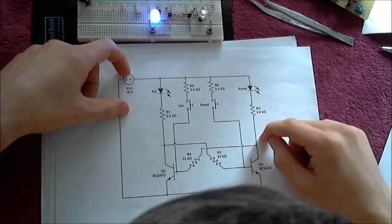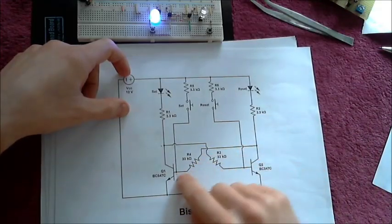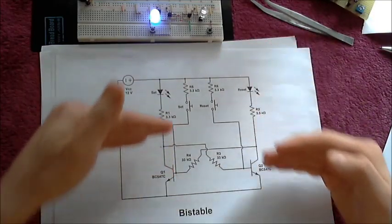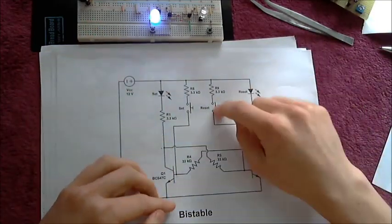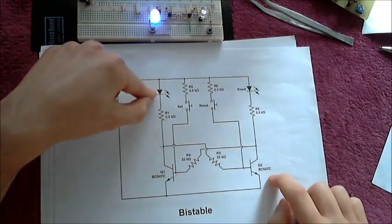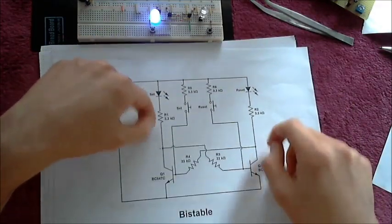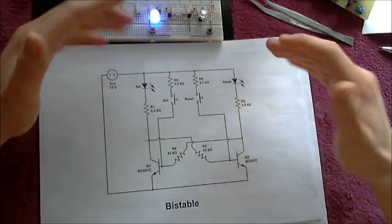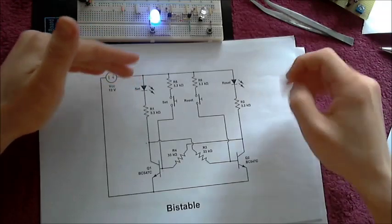When it turns even more on, the collector goes even higher, which means less current here. You can basically see that this is a feedback loop in which, when I push that switch, one transistor automatically pulls the other one up and the other one pushes the other one down. This is basically how the bistable flip-flop works.